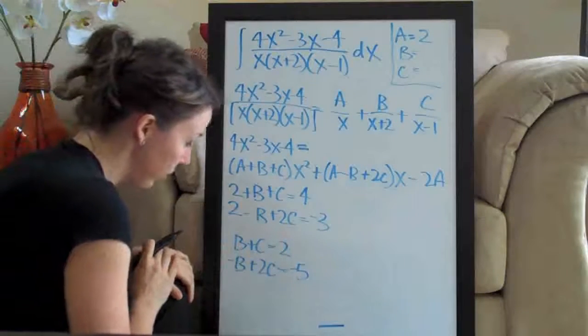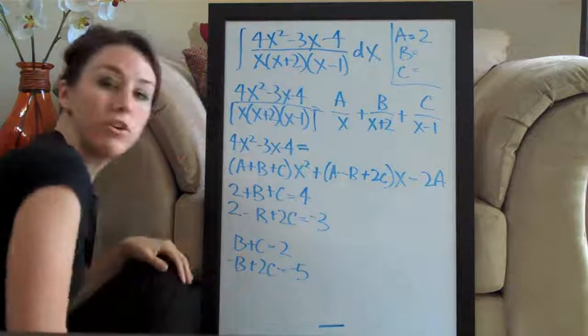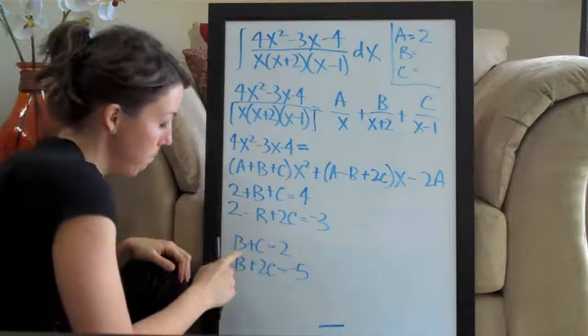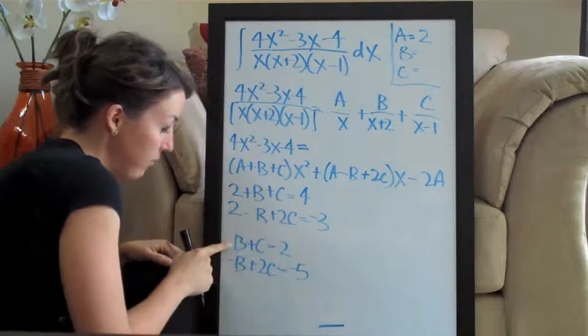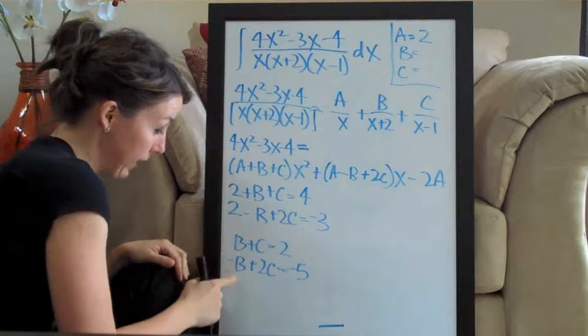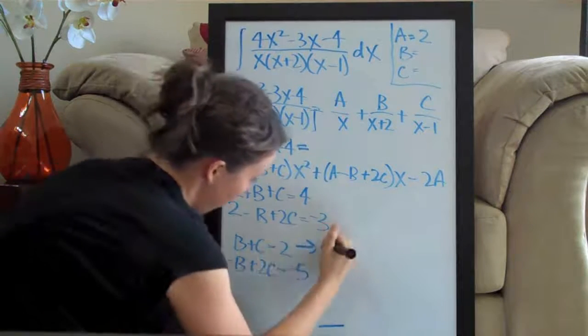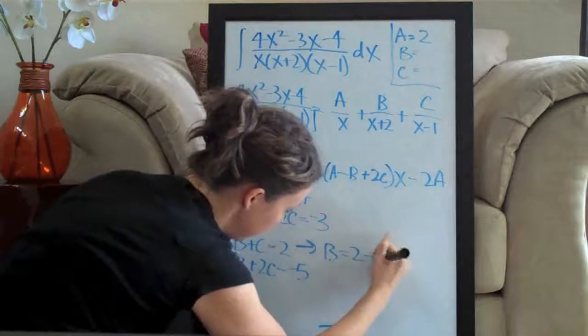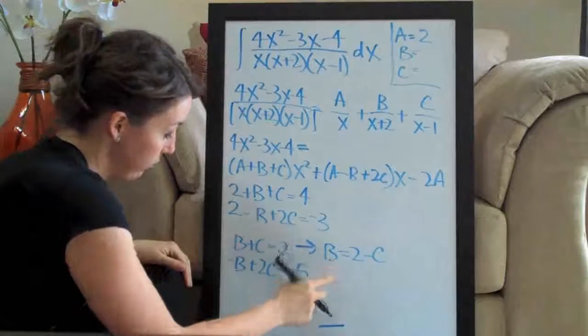So, now that we have these two equations, we can go ahead. You can do this in many, many ways. The way that I'm going to do it is I'm going to solve this top equation for b and then plug my answer back into here. So I'm going to say b equals 2 minus c. I subtracted c from both sides and I end up with an answer for b.